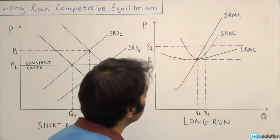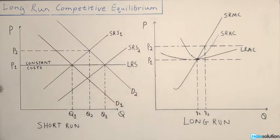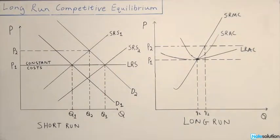So we're at the long-run equilibrium point right there. The question asks us to draw the market demand, short-run supply, long-run supply, the representative firm's short-run average cost curve and marginal cost curves, and the representative firm's long-run average cost curve. It also says to show the equilibrium price and quantity, and the representative firm's equilibrium quantity in the long run. This is how these curves would look.